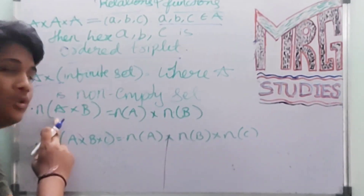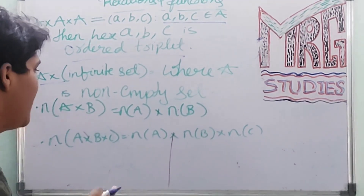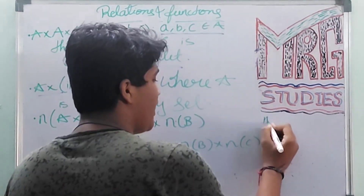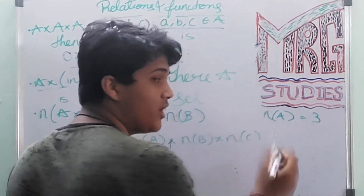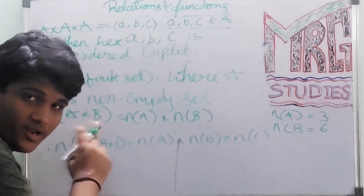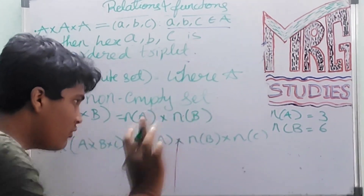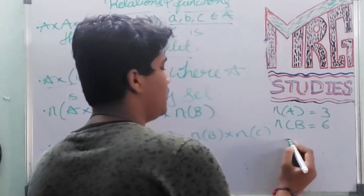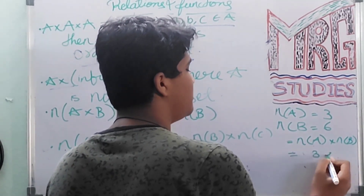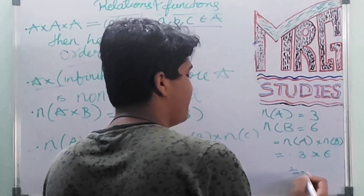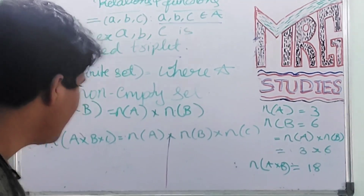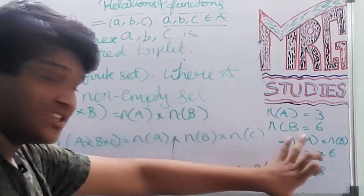Next point: N(A×B) = N(A) × N(B). Let's take N(A) = 3 and N(B) = 6. Then N(A×B) = N(A) × N(B) = 3 × 6 = 18. So the number of elements in the Cartesian product of two sets equals 18. We can use this formula to find the number of elements in a Cartesian product.